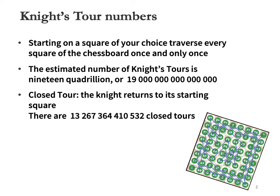While there are many open tours on the chessboard, the number of closed tours is also substantial. There are exactly 13 trillion, 267 billion, 364 million, 410 thousand and 532 closed tours altogether if direction is disregarded. A closed tour is a loop, so disregarding direction makes sense.